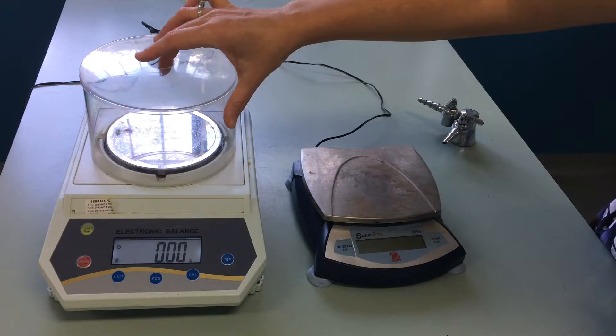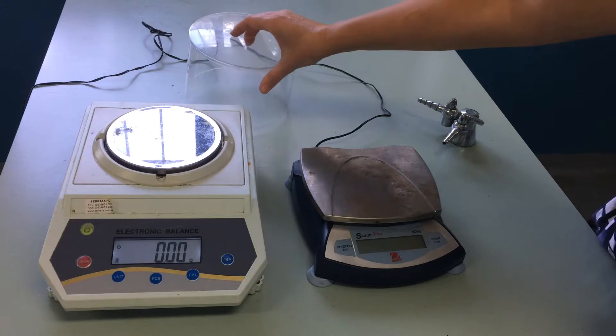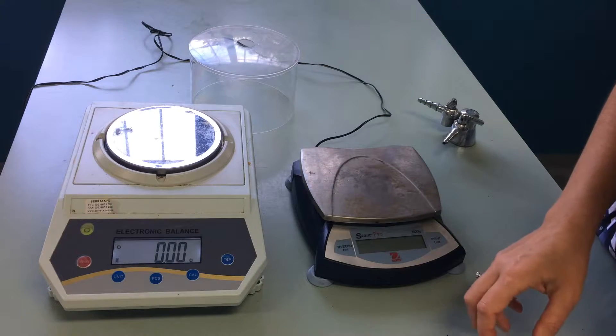If your balance has a lid like this one does, take it off, and now it's ready to weigh your object.